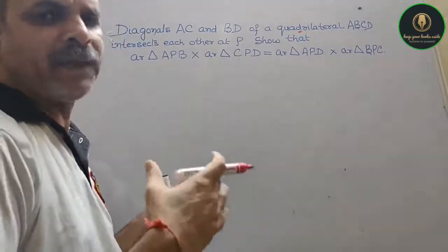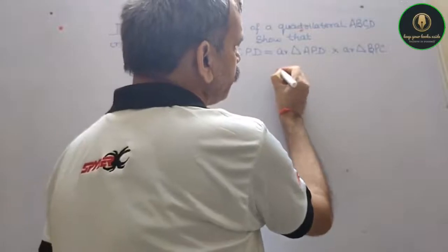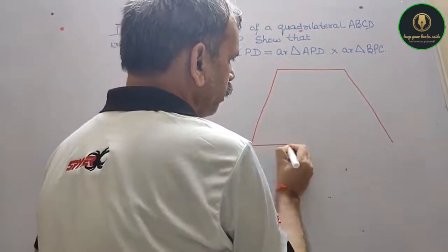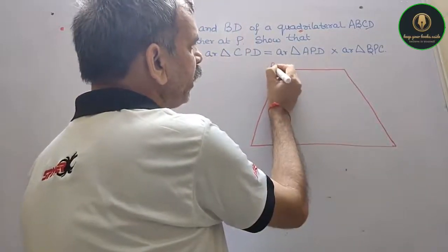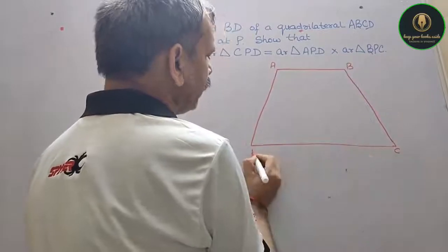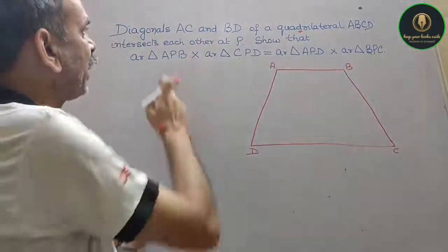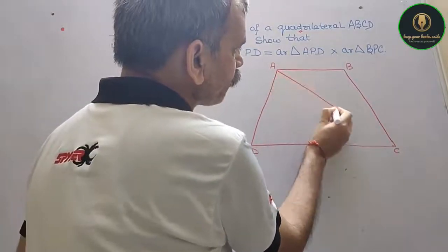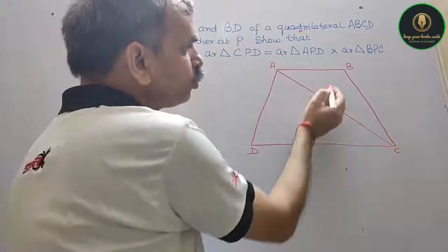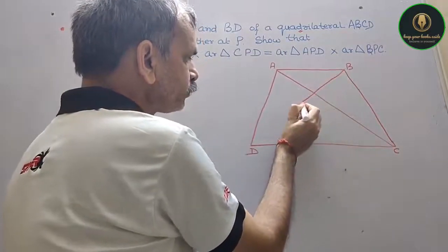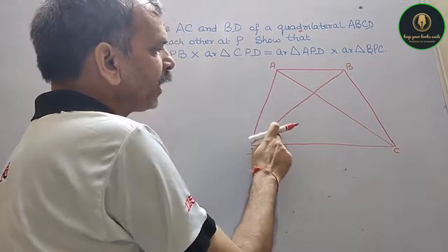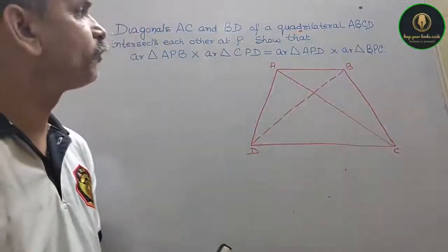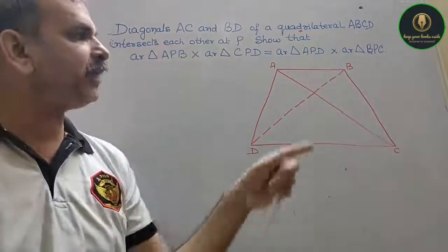We will draw a trapezium-type quadrilateral ABCD. This is your A, this is your B, C, and D. Now the diagonals AC and BD are also there, so we will draw the diagonals. AC is one diagonal and BD is the other diagonal. They intersect each other at point P — this is your P.